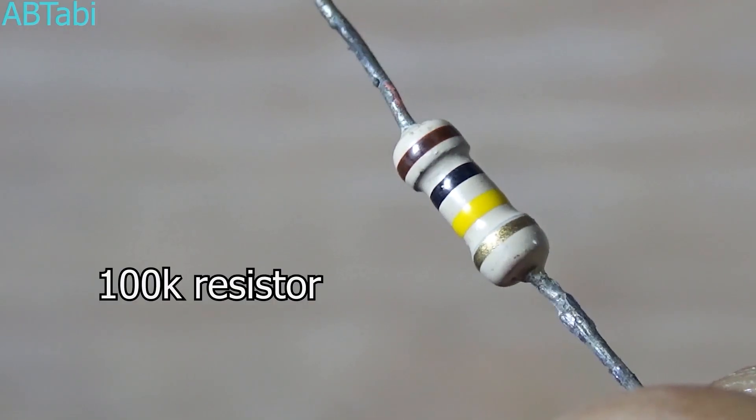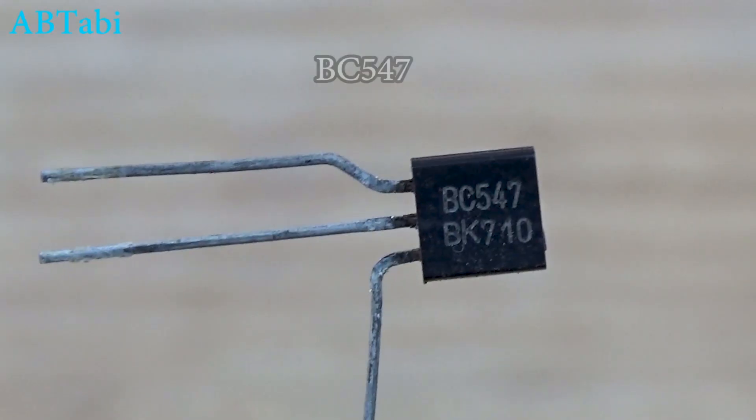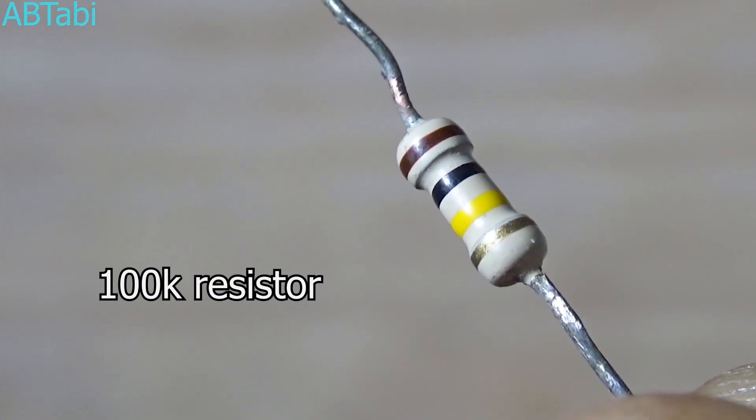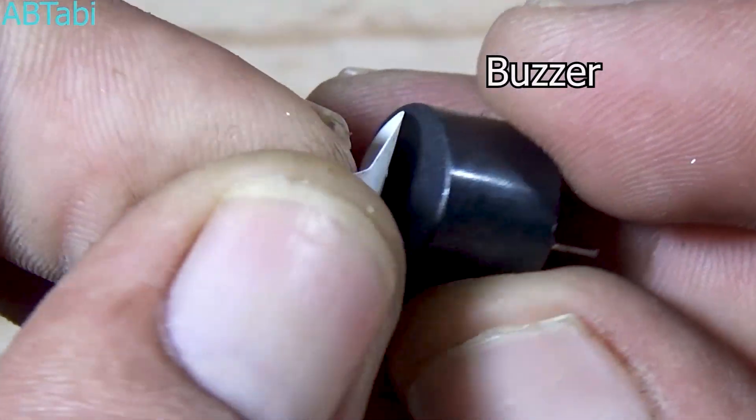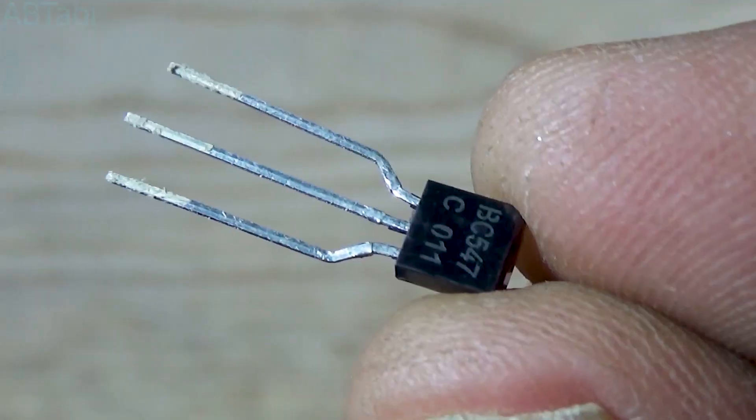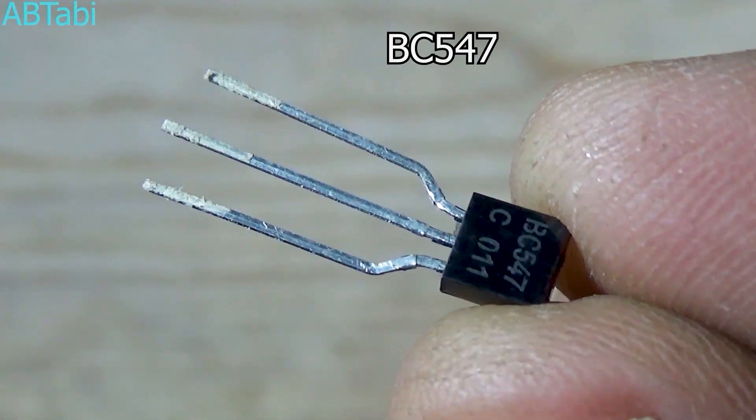Let's first see the components used in this project. One BC547 NPN transistor, one 100k ohm resistor quarter watt, one buzzer, one 12 volt DC battery or power supply, and a thin wire for the loop. That's it. No IC, no relay, no microcontroller.